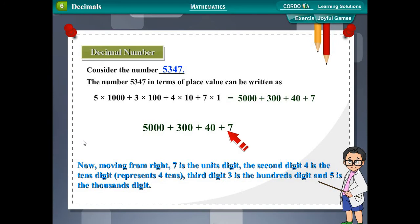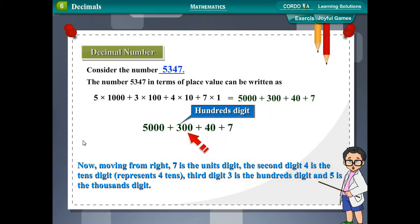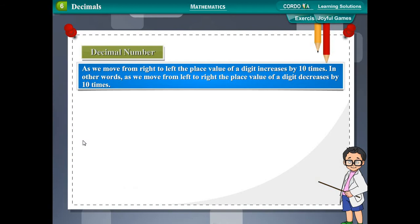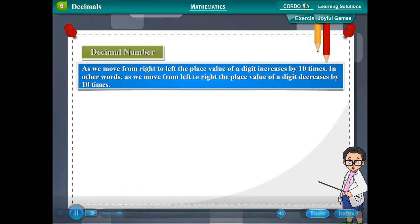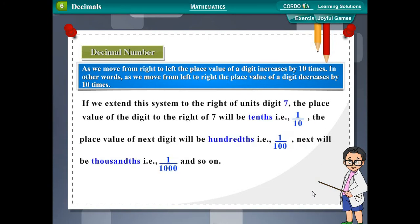Moving from right, 7 is the units digit. The second digit, 4, is the tens digit — it represents 4 tens. The third digit, 3, is the hundreds digit, and 5 is the thousands digit. As we move from right to left, the place value of a digit increases by 10 times. Equivalently, as we move from left to right, the place value decreases by 10 times.